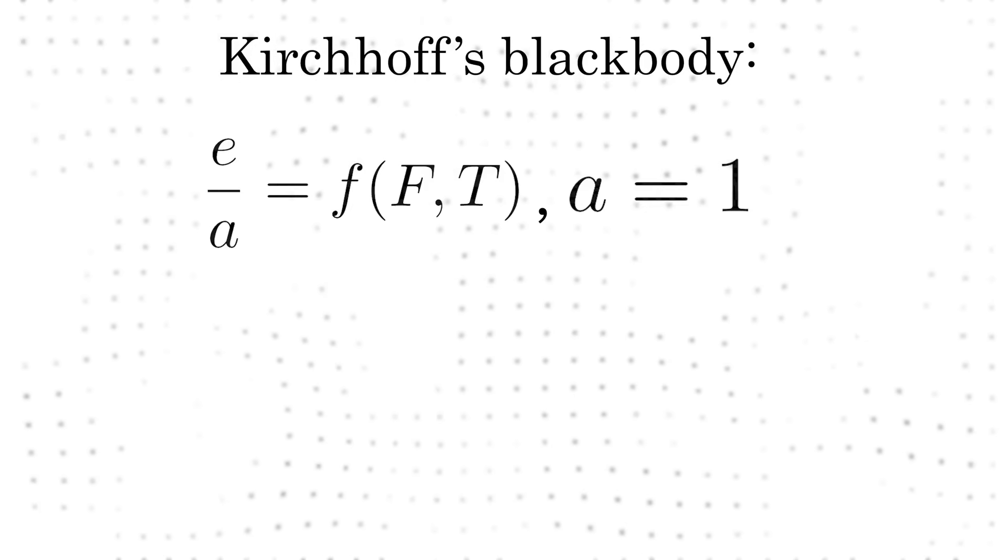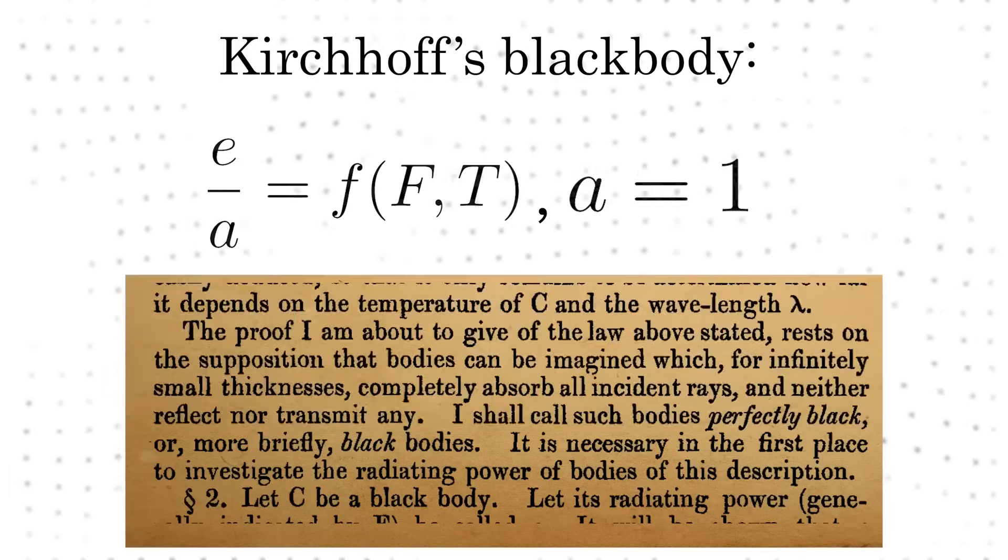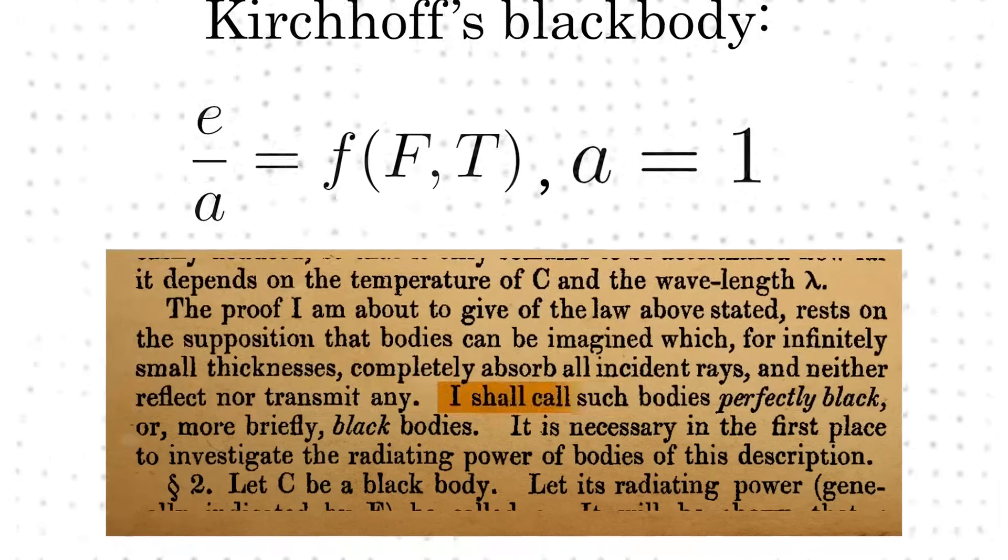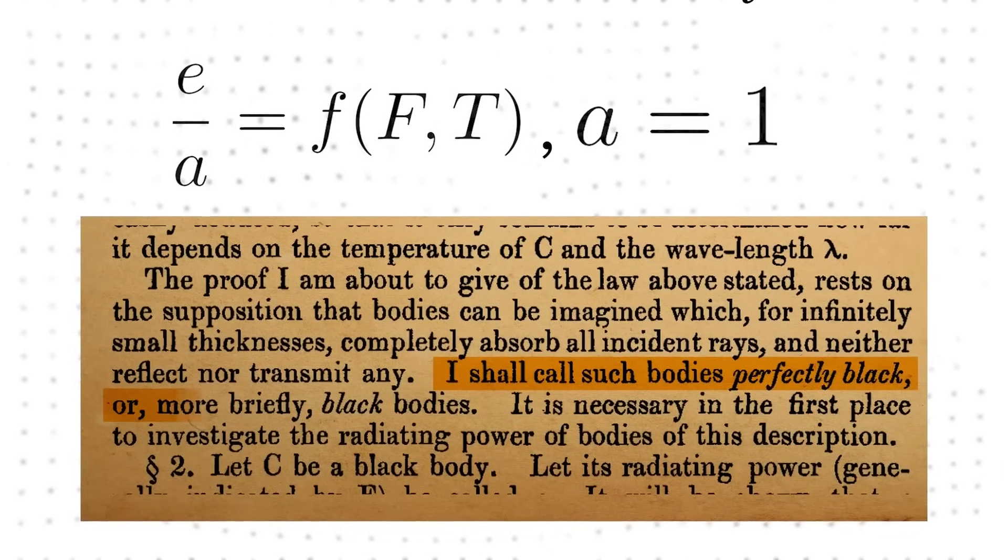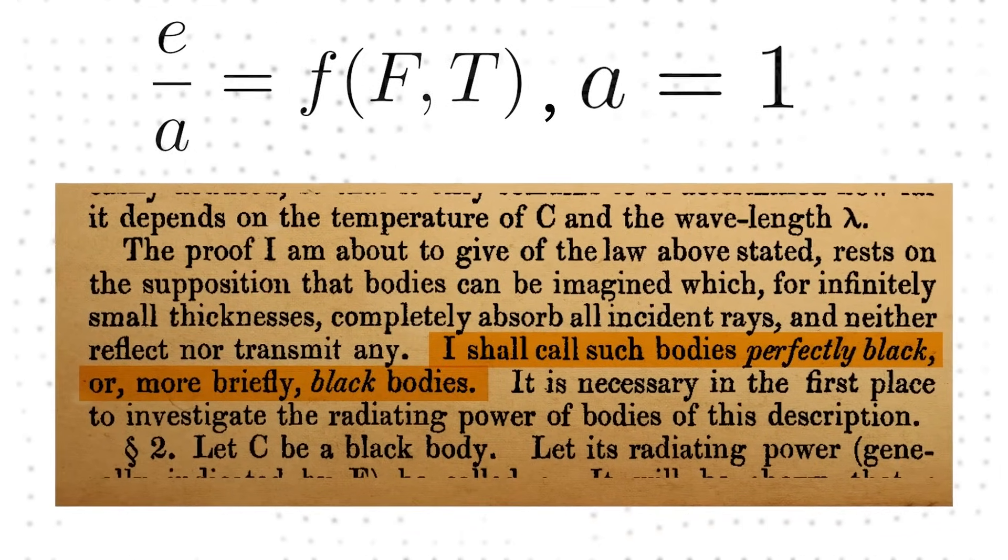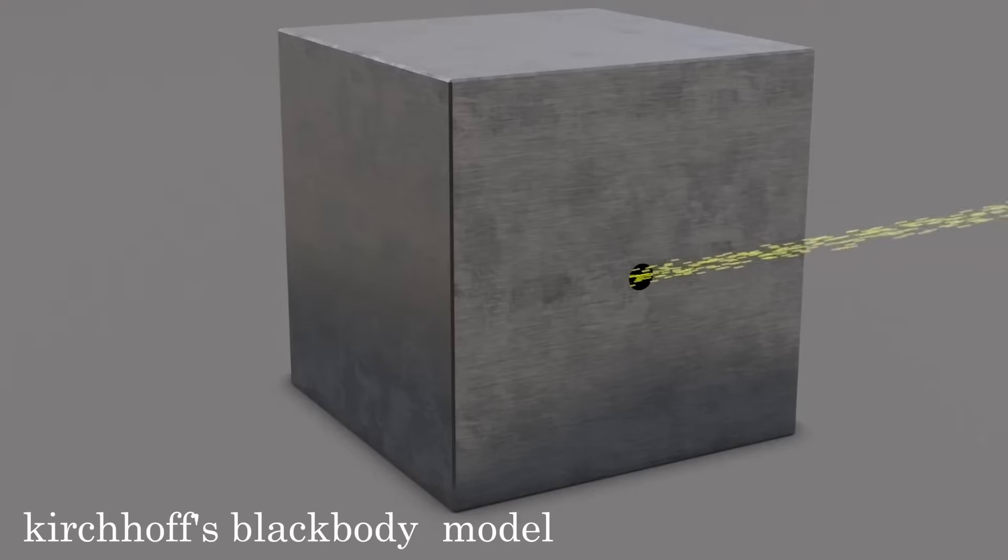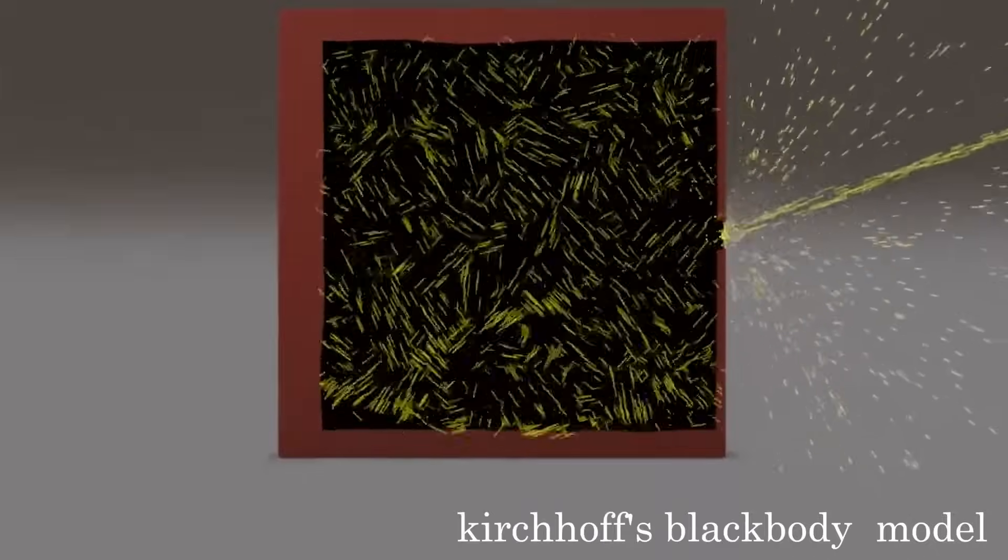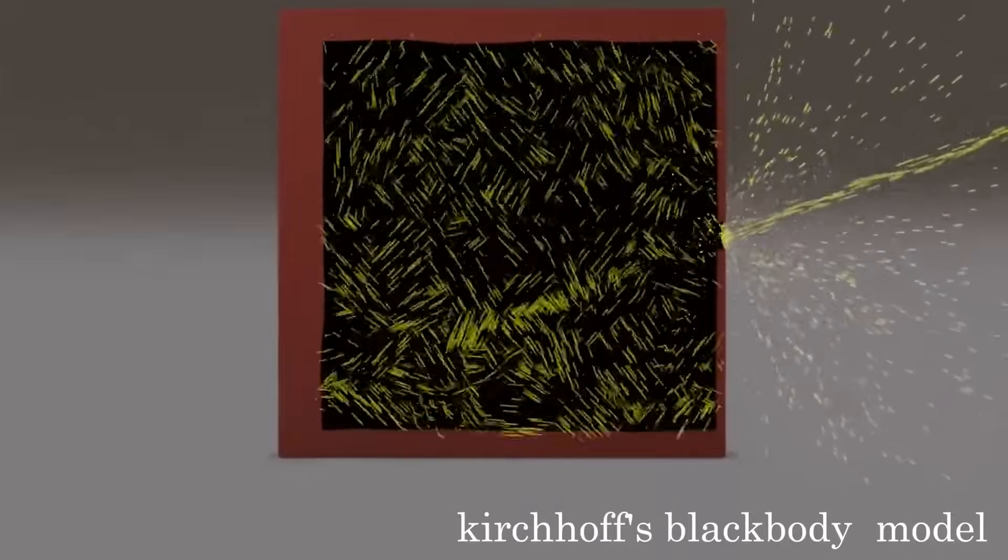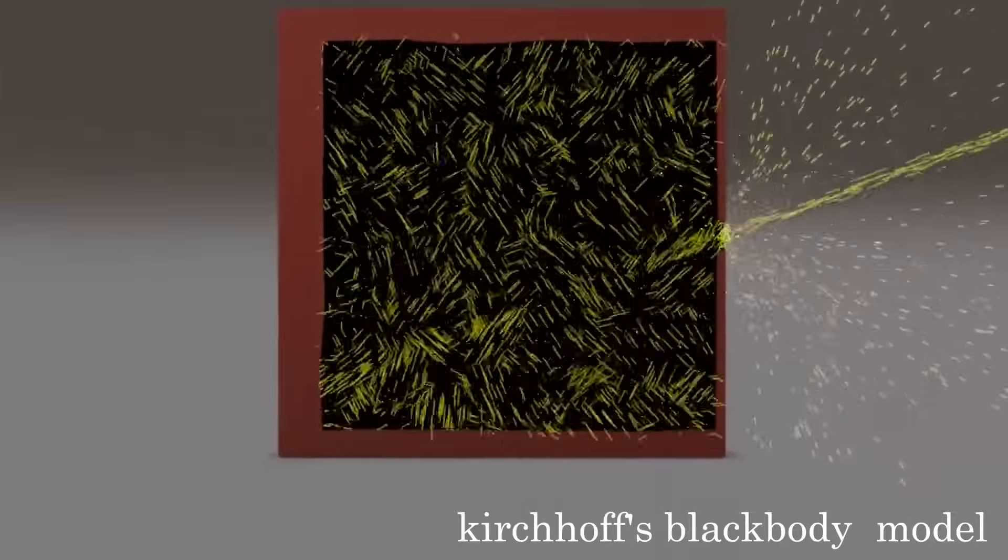In the same paper, Kirchhoff imagined an object that absorbed all the radiation falling upon it. He called this blackbody, and its absorptive power would be exactly one. Such a body would reflect no light at all, nor allows light to pass. But how could one possibly construct such a blackbody? Kirchhoff had a brilliant idea. He realized that an opaque oven with a small hole in its wall would serve as an excellent absorber. Any radiation entering the hole would bounce around inside, losing energy with each reflection until it gets eventually absorbed.